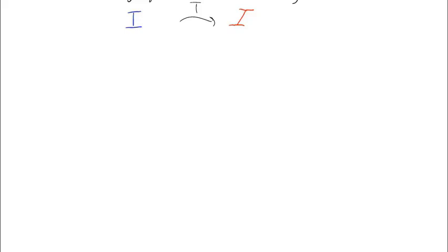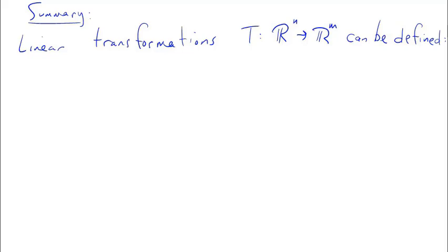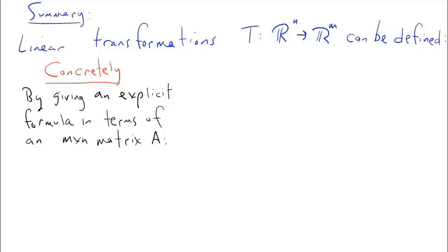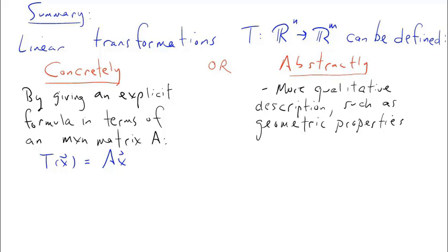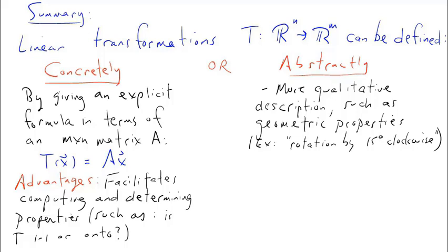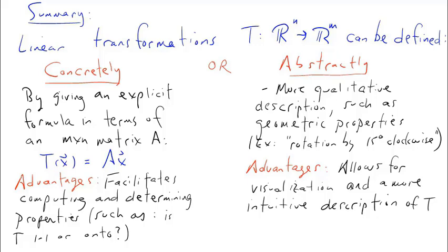In summary, linear transformations from Rn into Rm can be defined concretely or algebraically by giving an explicit formula in terms of an m by n matrix A — that is, T of x equals A times x — or abstractly, with a qualitative description such as geometric properties, for example rotation by 15 degrees counterclockwise. The advantage of the algebraic approach is that it facilitates computing and allows us to easily determine properties such as whether T is one-to-one or onto. The advantage of the abstract approach is that it allows for more vivid visualization and intuitive description of the action of T on vectors. We often go back and forth between these two approaches to fully understand and utilize linear transformations.